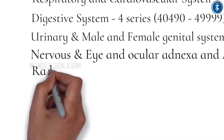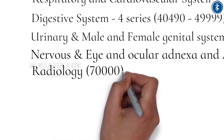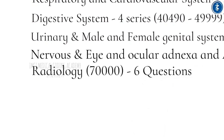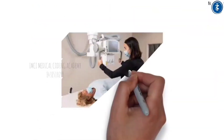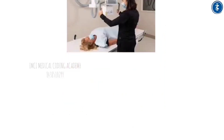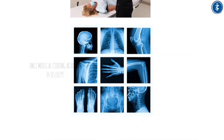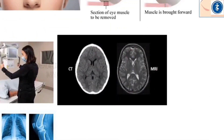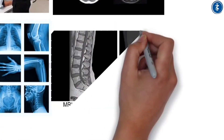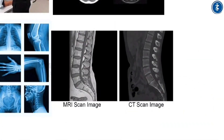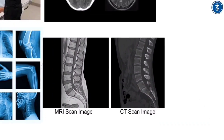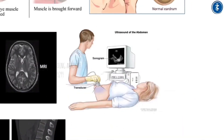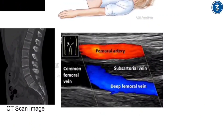The Radiology and Radiation Oncology section (Series 7, codes 70010–79999) contributes 6 questions covering scan imaging guidelines including X-ray, fluoroscopy, computed tomography (CT), CT angiography (CTA), magnetic resonance imaging (MRI), MR angiography (MRA), ultrasound (US), Doppler and duplex scan, and nuclear medicine.